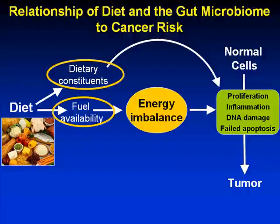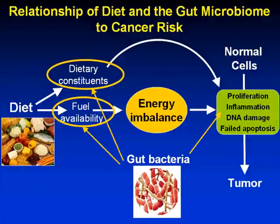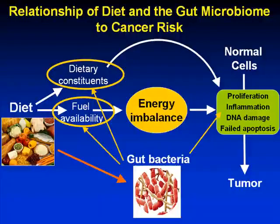The other piece is the interaction with gut bacteria — not only with regards to fuel availability, but also in relation to metabolism of dietary constituents. There is potential for direct effect on cellular processes related to tumorigenesis, as well as a direct effect of diet on the gut microbiome and the impact of food choices on what the microbial community looks like.